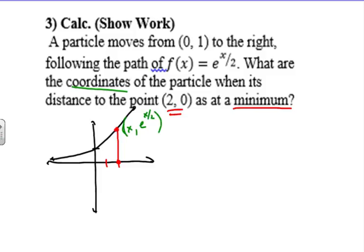Now from here, what we're going to do is we're going to set up the distance formula by taking our one point, which is (2, 0). And the distance formula is the square root of, we'll have x minus 2 squared, plus then we'll take our y's and it'll be e^(x/2) minus 0, and then quantity squared.